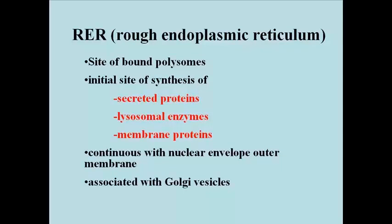In eukaryotic cells, bound ribosomes are attached to membranes of the rough endoplasmic reticulum, or RER, which is actually continuous with the outer membrane of the nuclear envelope. The RER is typically situated in cells near the nucleus on the one hand, and near Golgi vesicles on the other.